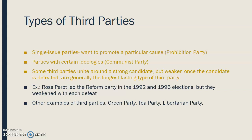There are different types of third parties. The first is a single-issue party, which promotes only a certain cause. One of these was the Prohibition Party, whose entire focus was pushing prohibition and making alcohol illegal. Some parties have different ideologies — one major example is the Communist Party, which is still around today, though they have not won anything. Some third parties unite around a strong candidate but weaken once the candidate is defeated, and these are generally the longest-lasting type. One example was the Reform Party in 1992 and 1996, led by Ross Perot, but when he lost both election bids they faded away into nothing.